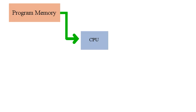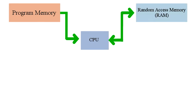But that's a topic in itself and will be covered in an upcoming video. Random Access Memory, or RAM for short, is the type of memory used to hold temporary information for the program that the CPU is running.